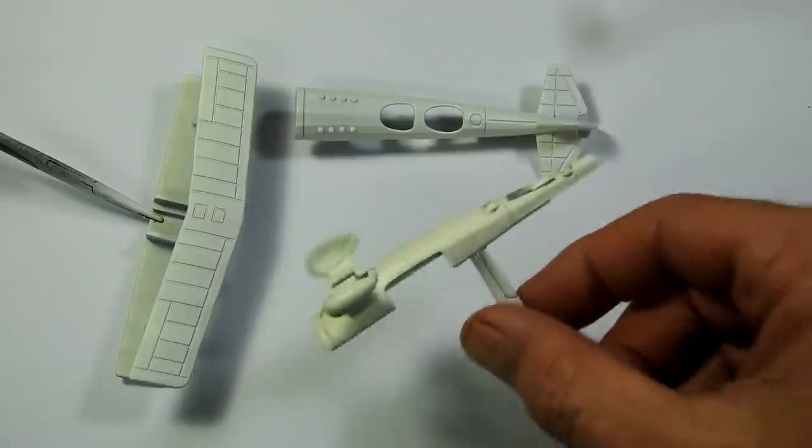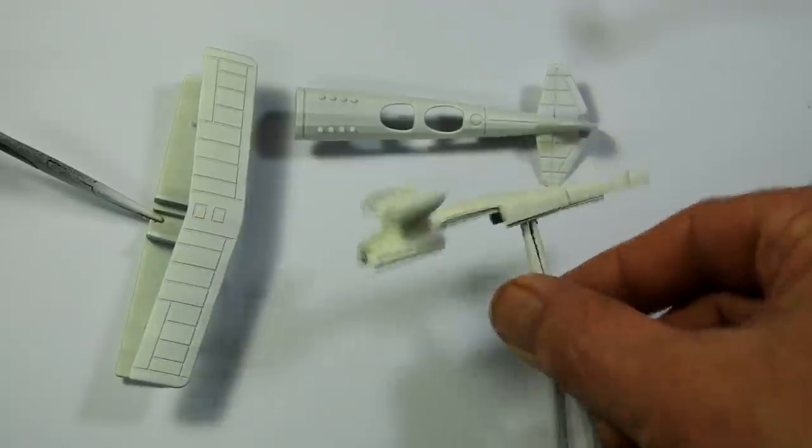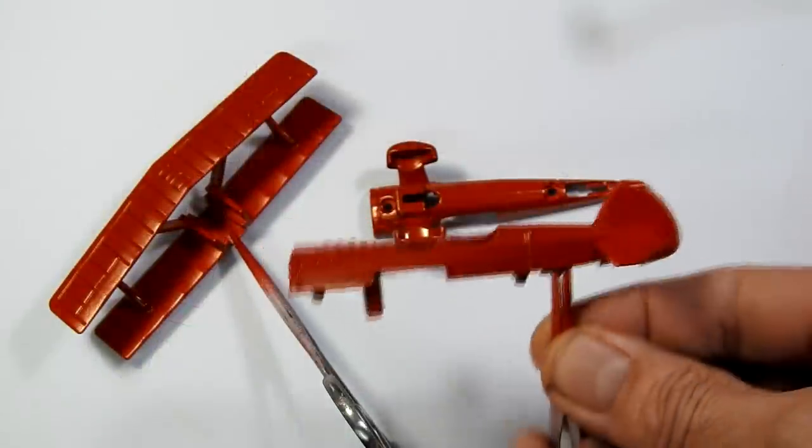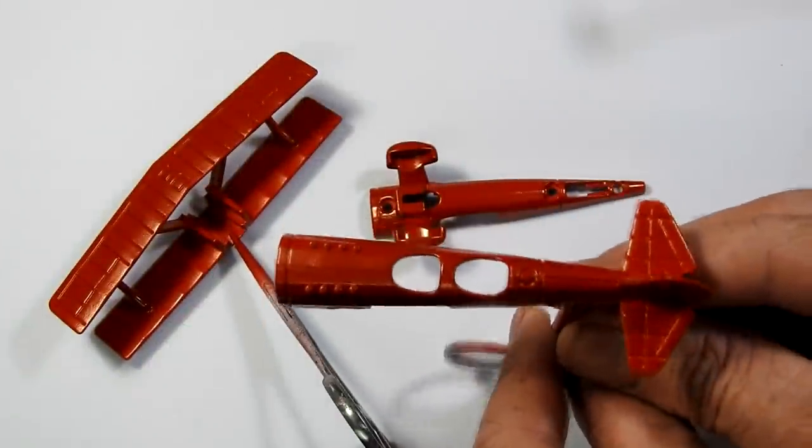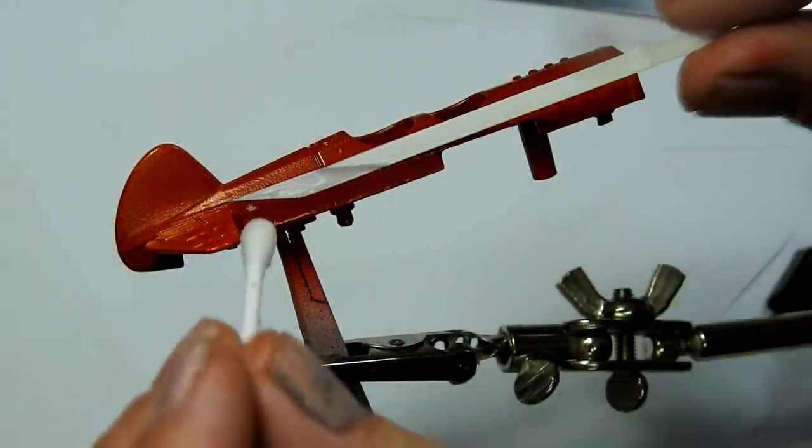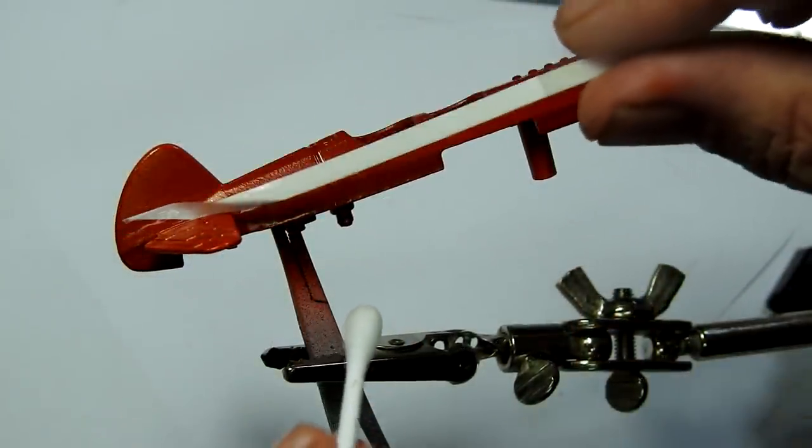Body parts of the plane were with some white primer, and then the same red as the Studebaker. Again, I'll use some white decal paper, and some stripes.